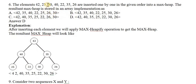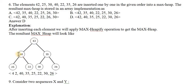The question was: elements 42, 20, 30, 40, 22, 35, 26 are inserted one by one in given order into a max heap. The resultant max heap is stored in array implementation. Max heap is the heap tree in which you want to place data such that every root node, whether it is the final root node or an internal root node, must have a maximum or larger value than its children.